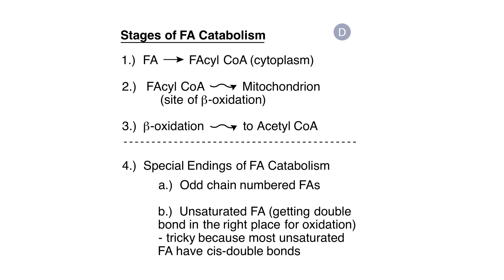Those reduced electron carriers have the potential to be converted into energy currency in the form of ATP. The fourth stage in fatty acid catabolism concerns specialized endings of the catabolic pathway. The first problem is that some fatty acids have an odd number of carbons, whereas the classical beta-oxidation system was primarily designed to process fatty acids with even numbers of carbon units. The second problem concerns fatty acids in our diet that have a double bond in the wrong stereochemistry or in the wrong place. Nature has worked out ways to reposition the double bond to facilitate entry into classical beta-oxidation.